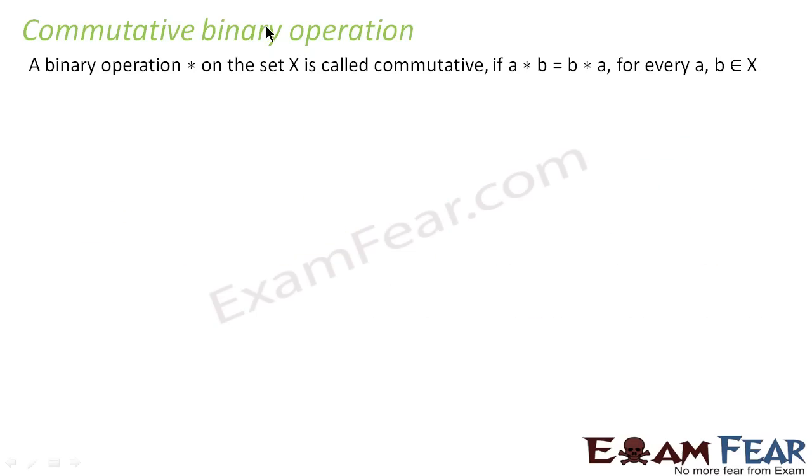A binary operation star on set X is called commutative if a star b is equal to b star a for all a and b that are part of set X. So here this is set X, on this I am defining a binary operation.